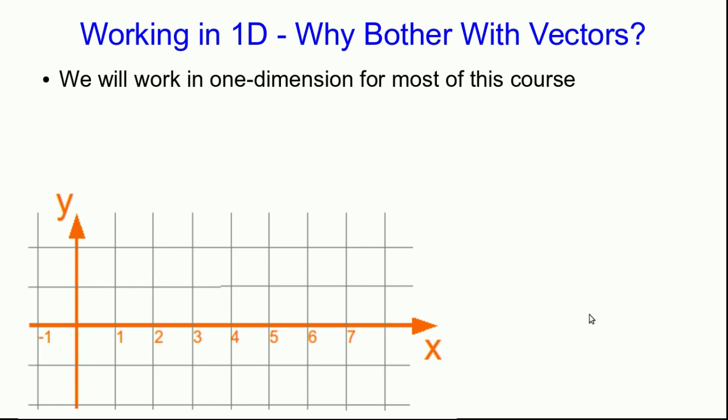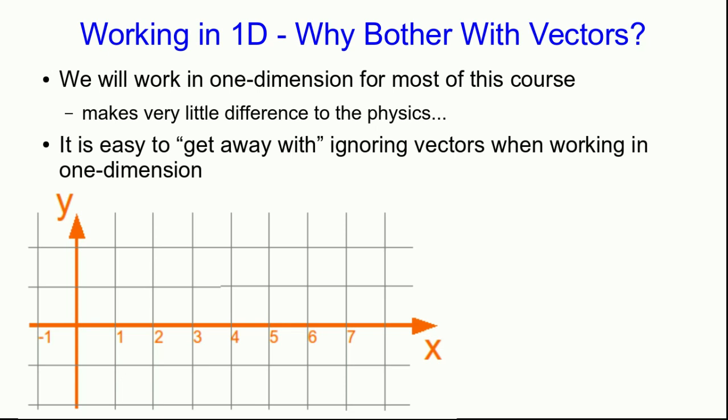You may be surprised at how long we're going to spend working in one dimension in this course. This is quite deliberate. It's because it really makes very little difference to the actual physics whether we're working in one dimension or more. And so it's easier to work in one dimension where we don't have directions to complicate things. Well it's easy to sort of get away with ignoring vectors when you're working in one dimension. Although I'm going to say that you shouldn't try to get away with it. Let me explain what I mean with an example.